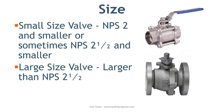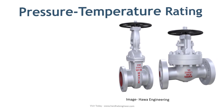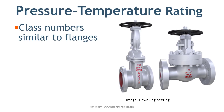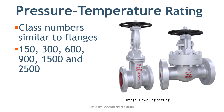Classification based on pressure-temperature rating. Pressure-temperature ratings of valves are designated by class number, similar to flanges. These class numbers are 150, 300, 600, 900, 1500, and 2500. Pressure-temperature ratings for each class of valve depend on the material of construction of the valve.